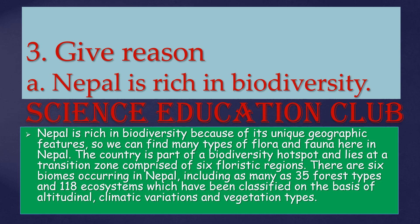Nepal lies at the transition zone comprised of six floristic regions. There are six biomes occurring in Nepal, including as many as 35 forest types and 118 ecosystems, which have been classified on the basis of altitudinal, climatic variation, and vegetation types.